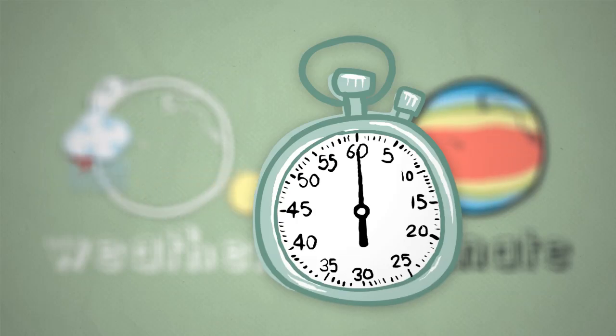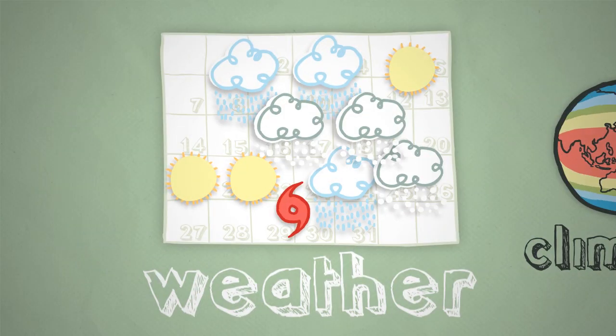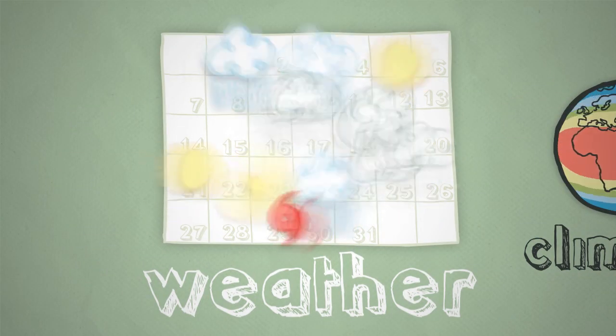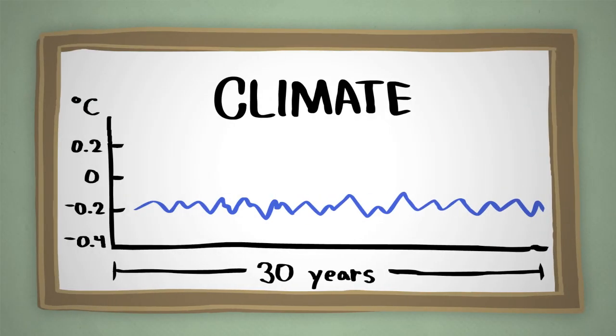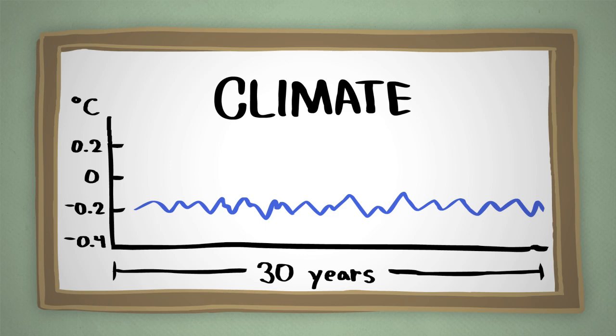That difference is really just a matter of time. Weather happens day to day, even hour to hour, and is still pretty unpredictable. Climate happens over longer periods of time, 30 years and longer, and is usually predictable.